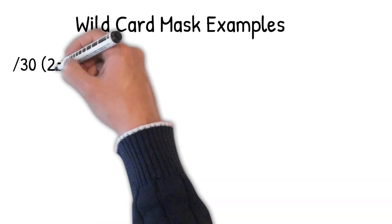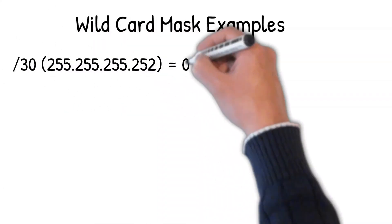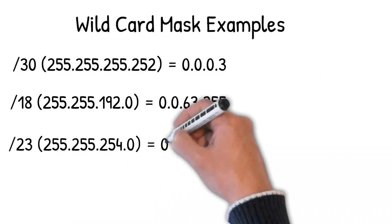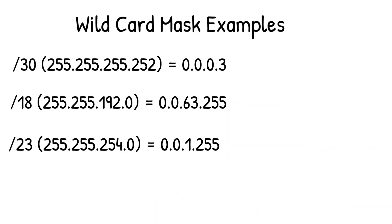Here are some examples of subnet masks and their corresponding wildcard masks. It's really easy to convert a subnet mask into a wildcard mask — just subtract the subnet mask from all 255s and that will give you your wildcard mask.